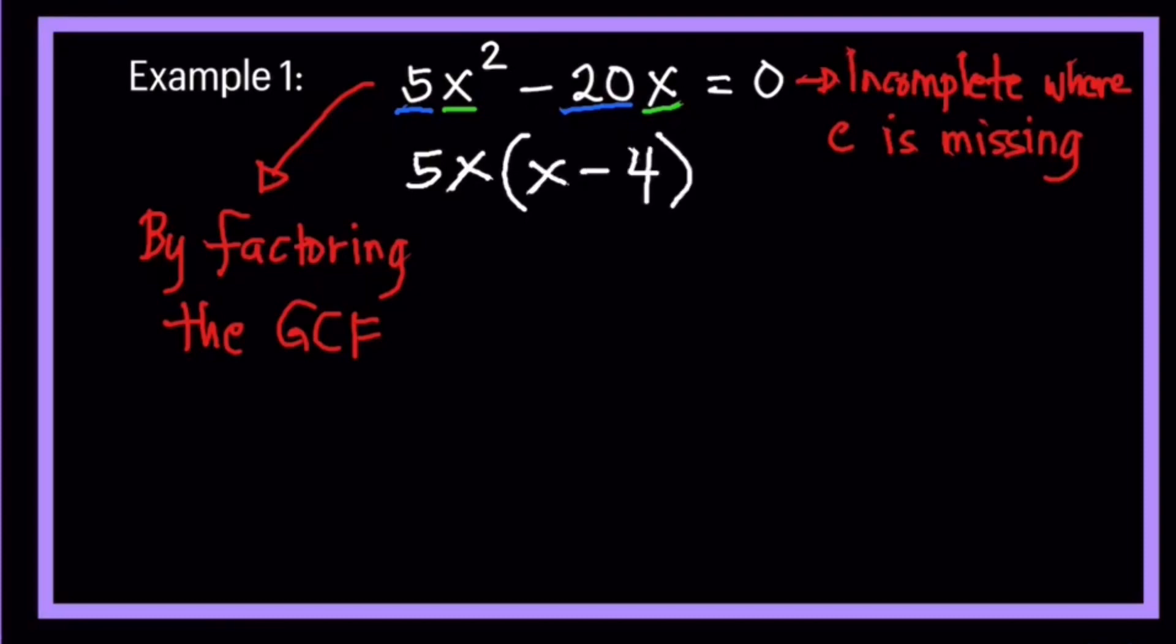5x squared divided by 5x, you have x. And then negative 20x divided by 5x will become negative 4. And then we split now the equation into 2. The first one is equate to 0: 5x is equal to 0, and the other one is x minus 4 is equal to 0. Then solve for x.